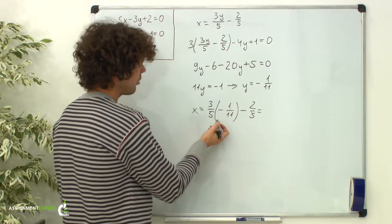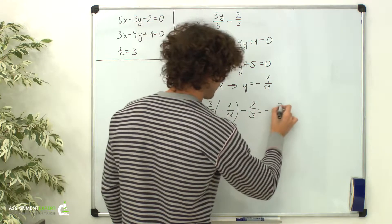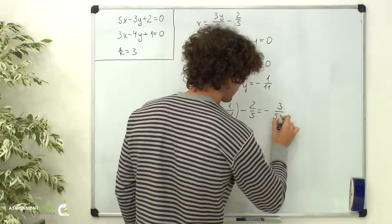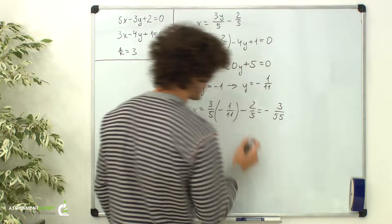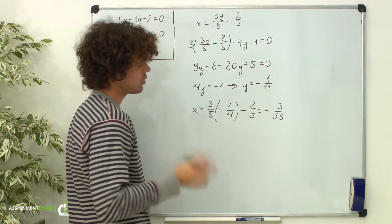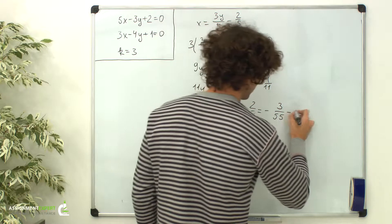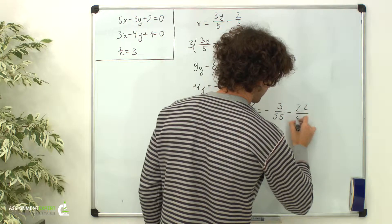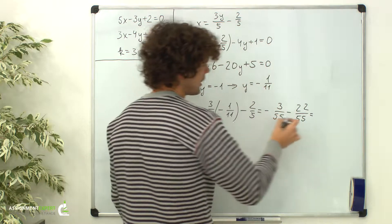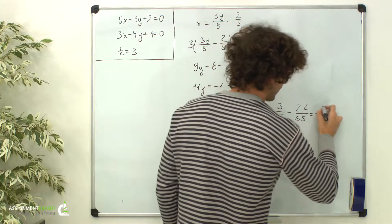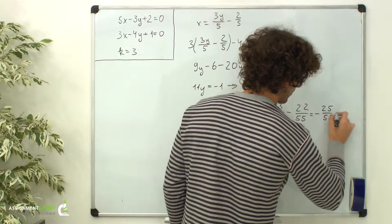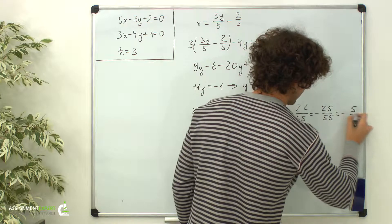Here we get negative 3 over 55. And this fraction we can represent as negative 22 over 55. So we get negative 25 over 55, or negative 5/11.